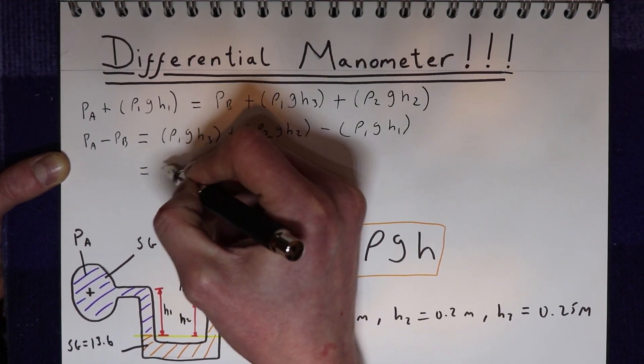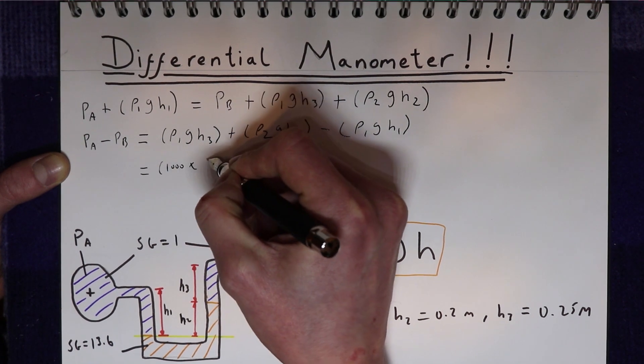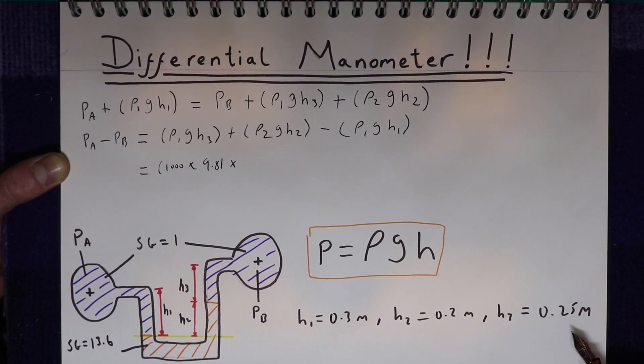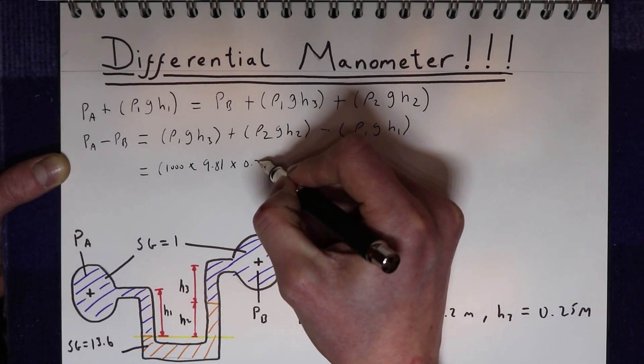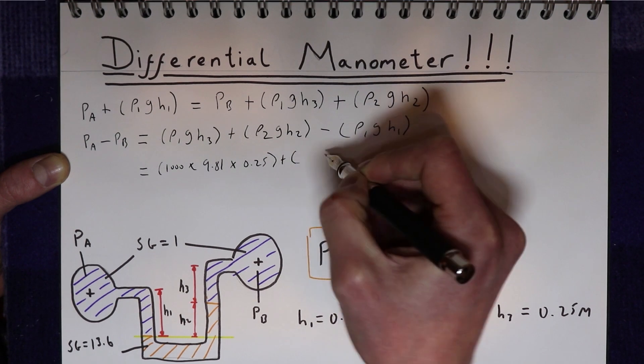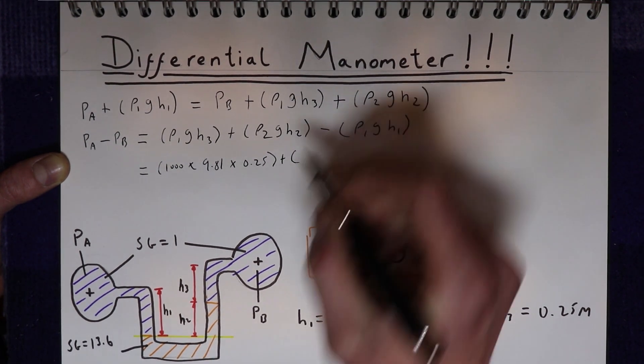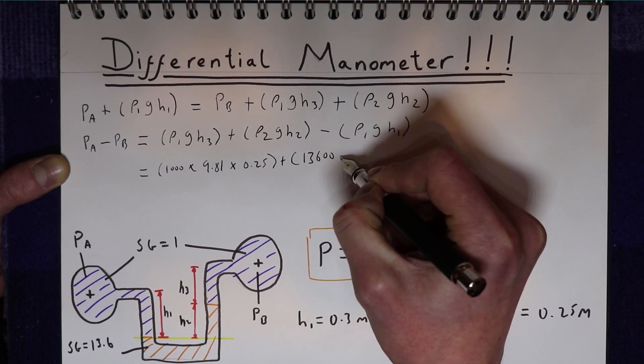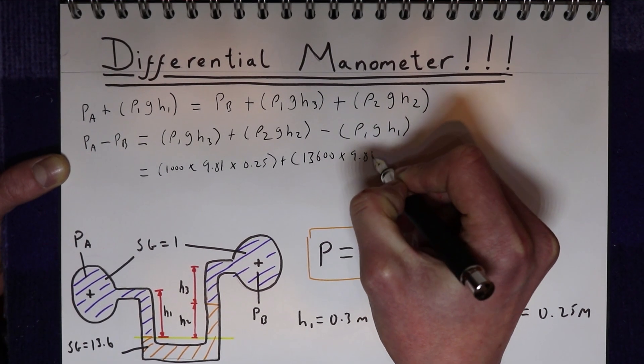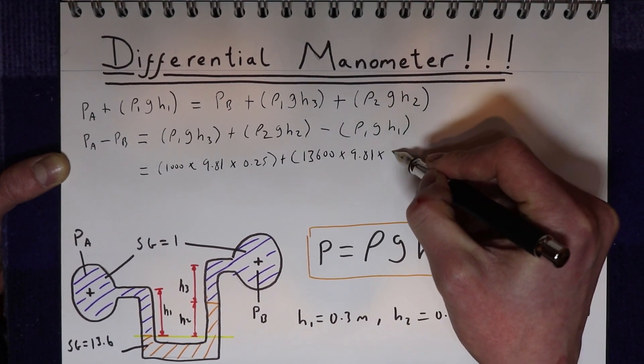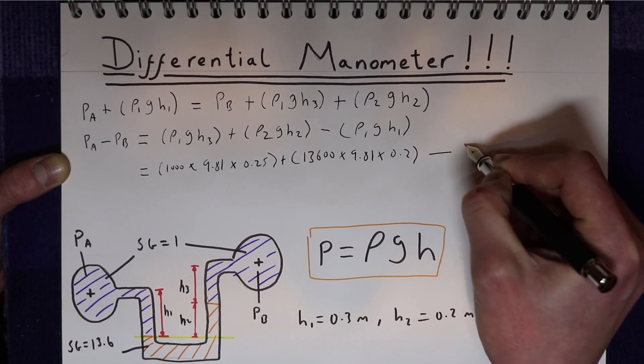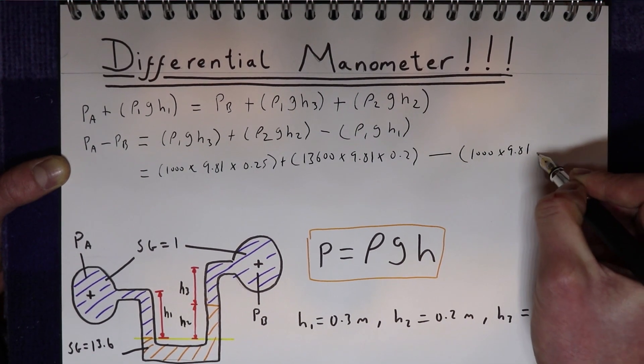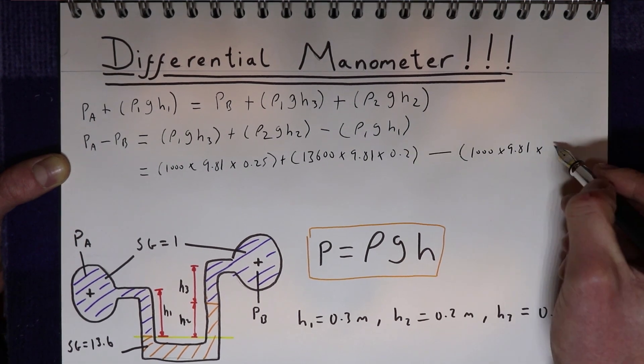So the pressure difference is going to equal 1000 for the density of water, times 9.81 times H3 which is 0.25, plus the density of mercury. Well we know the specific gravity is 13.6, so the density is 13.6 times the density of water, times 9.81 times H2 which is 0.2, and then minus the density of water times gravity times H1 which is 0.3.